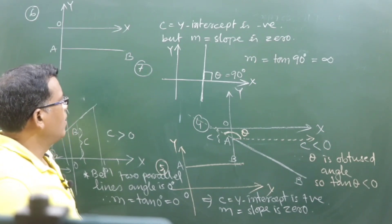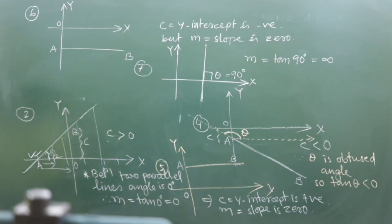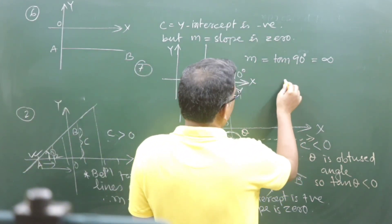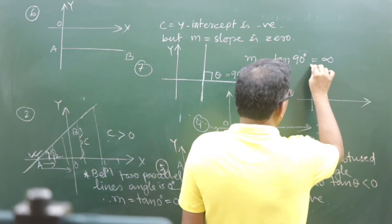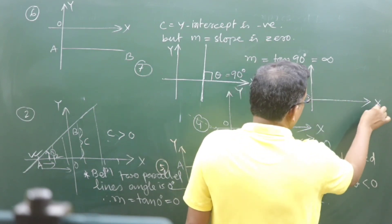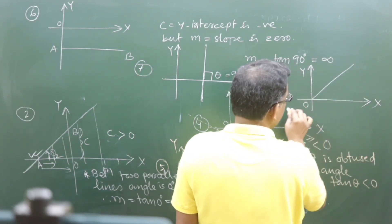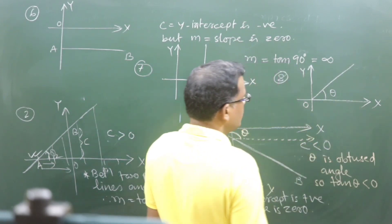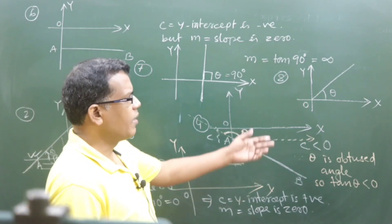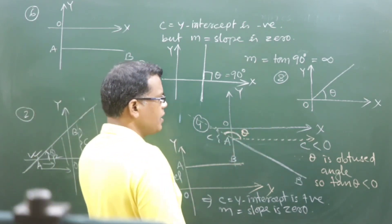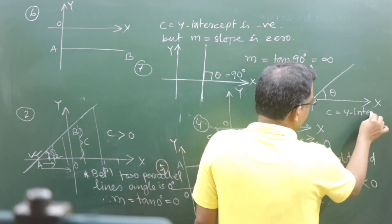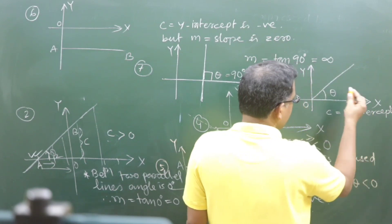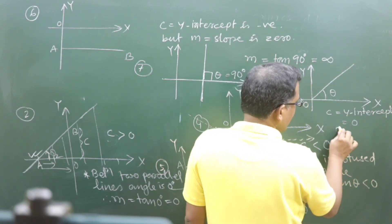Similarly, if I draw another possibility — suppose a line is drawn on the x-y plane passing through the origin — this time the y-intercept will be 0 because it is passing through the origin. It is not cutting the y-axis anywhere, so the y-intercept is 0.